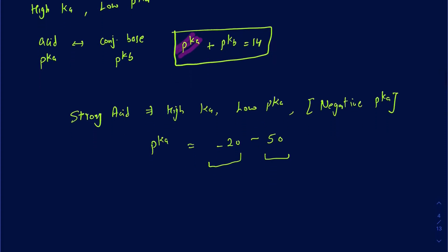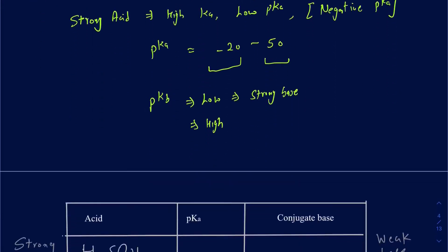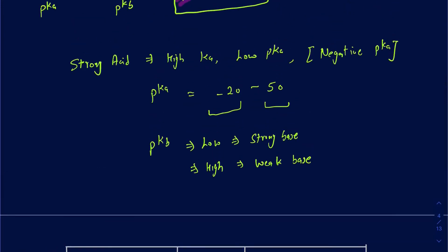The same applies to pKb values. If the pKb is low, it's going to be a strong base; if the pKb is high, it's going to be a weak base. Focus more on pKa values since that's what organic chemistry commonly uses to determine acidity. Always keep in mind that if you have a stronger acid, the conjugate base of that acid is going to be very weak — it's just an inverse relationship.